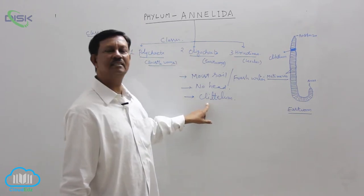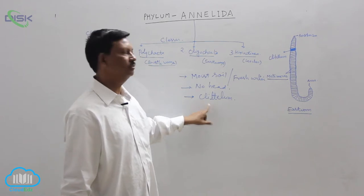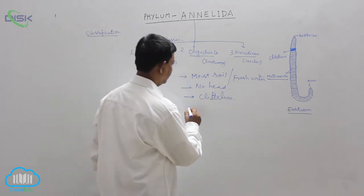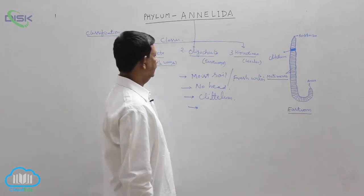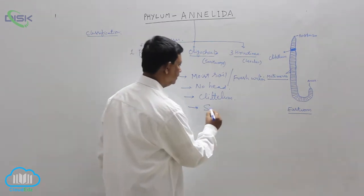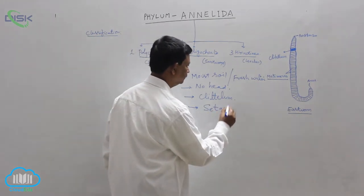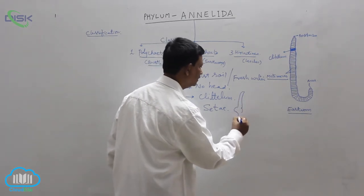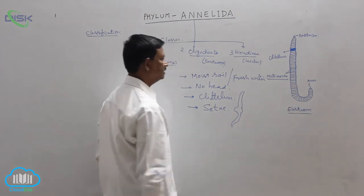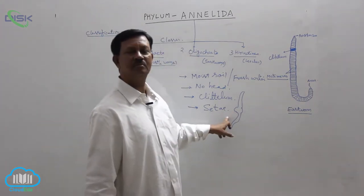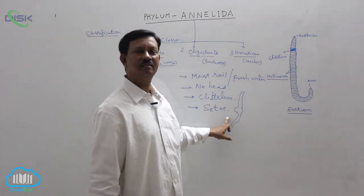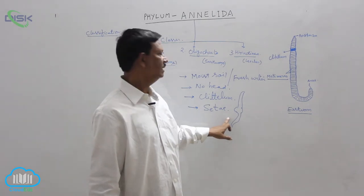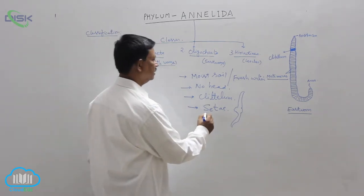The main locomotory organs are chaetae. They are S or F shaped structures which are chitinized structures present in the epidermis. With the help of this, they can move from one place to another. That's why the main locomotory organs are chaetae.